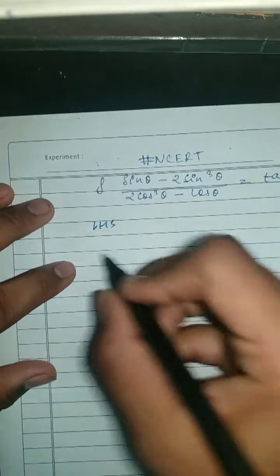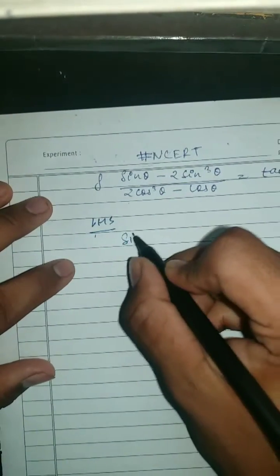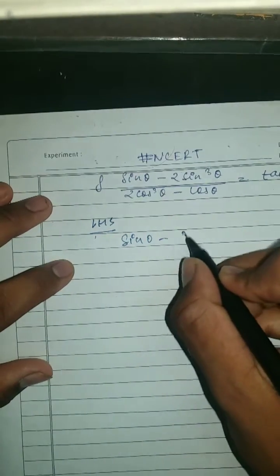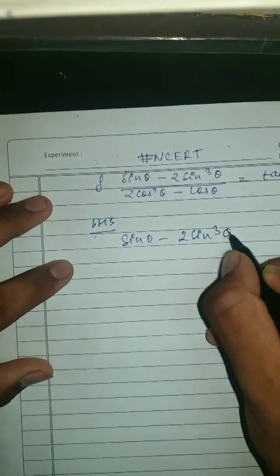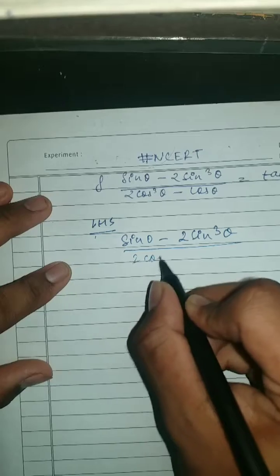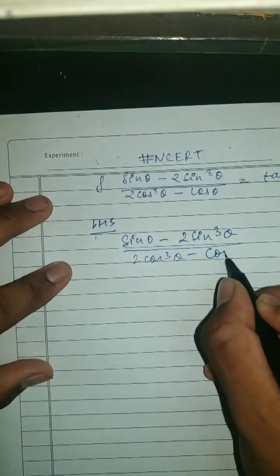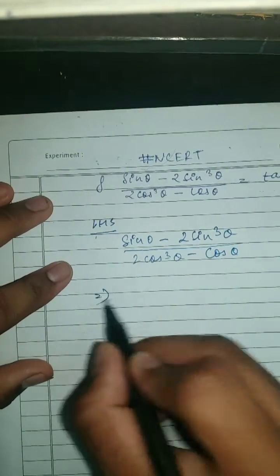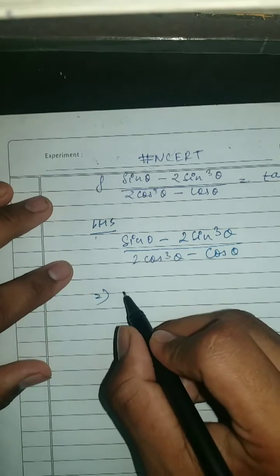Here what we have given is the RHS, so let's solve LHS. Taking LHS here, what we have is sine theta minus 2 sine cube theta upon 2 cos cube theta minus cos theta. So here taking common.